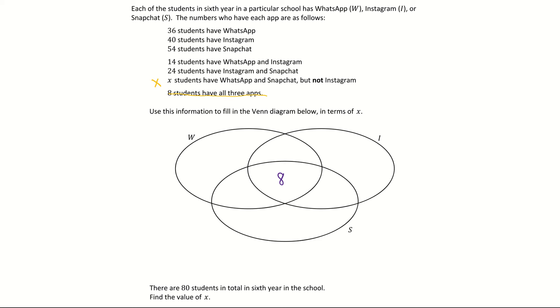The next one I'm moving on to is the x. X students have WhatsApp and Snapchat but not Instagram. So I'm coming down to WhatsApp and Snapchat and I'm filling in x. I don't need to do anything with the eight because it excludes anyone that has Instagram. That's why it says but not Instagram. So that's the first two done.